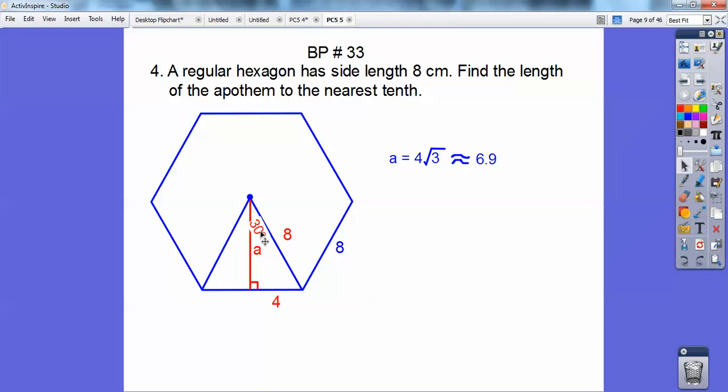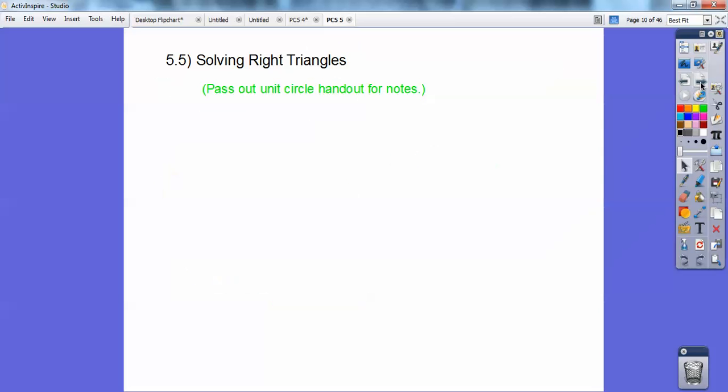And it turns out, since that's 8 right there, this side's 8, and this is going to be half of that, that's 4, so this is going to be 4 root 3. So 4 root 3 is approximately 6.9. 30, 60, 90 triangle.